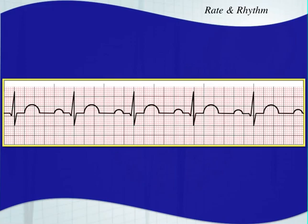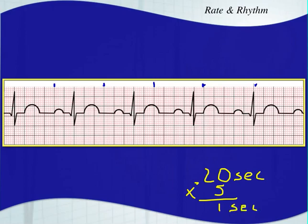When I went over the ECG paper and what all the different lines were identifying, I taught you a quick way to identify the rate. These little lines that stick up are your one-second markers, because each one contains five big boxes from left to right, and each big box is 0.20 seconds. Multiply that times five and you get one second. So each one of those lines is one second — one second here, one second here, and so on.